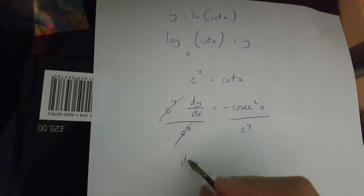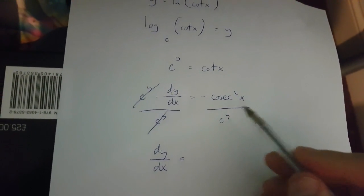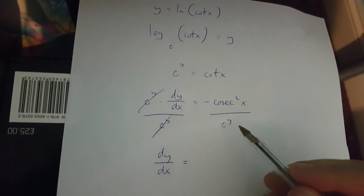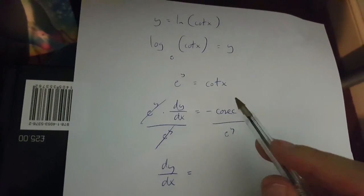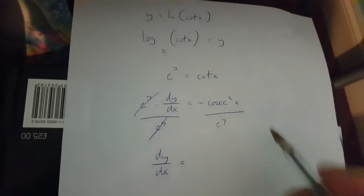If I do this, what I'll get is dy over dx is minus cosec x squared divided by e to the power of y. But it turns out that e to the power of y is actually cotx.